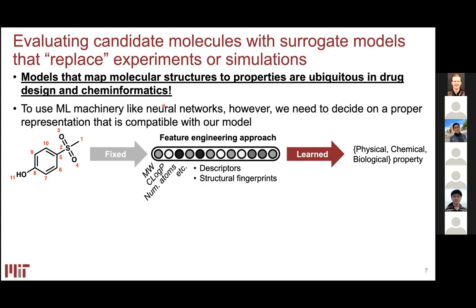When mapping molecular structures to properties, one key question is how to represent molecules as inputs to a machine learning pipeline. Neural networks expect vector-valued inputs, but molecules are not inherently vectors, strings, or images. For a long time the predominant approach was feature engineering — representing a molecule as fixed numerical properties like molecular weight, lipophilicity, and so on.